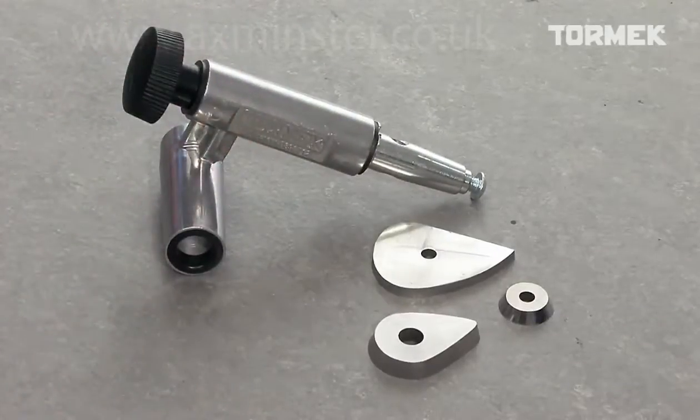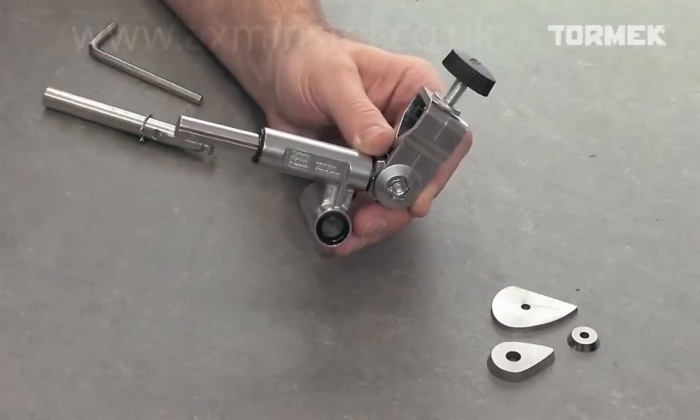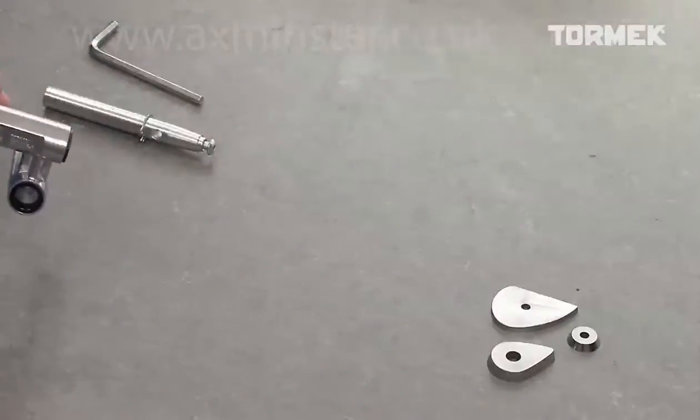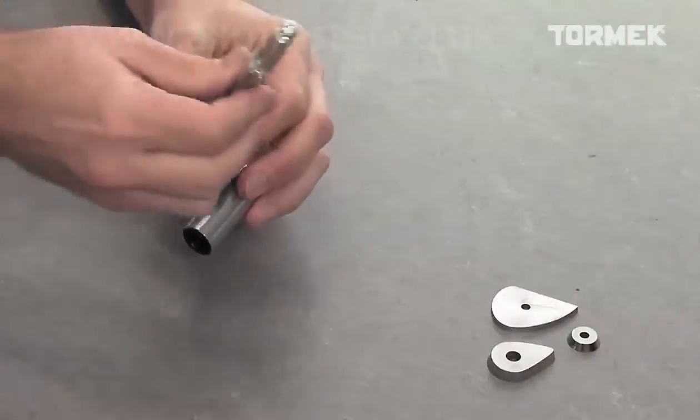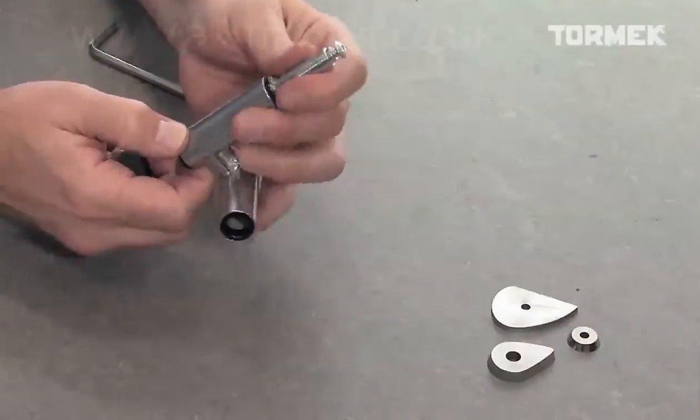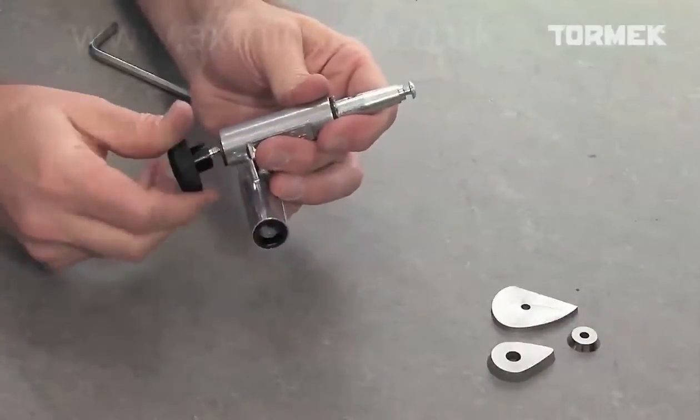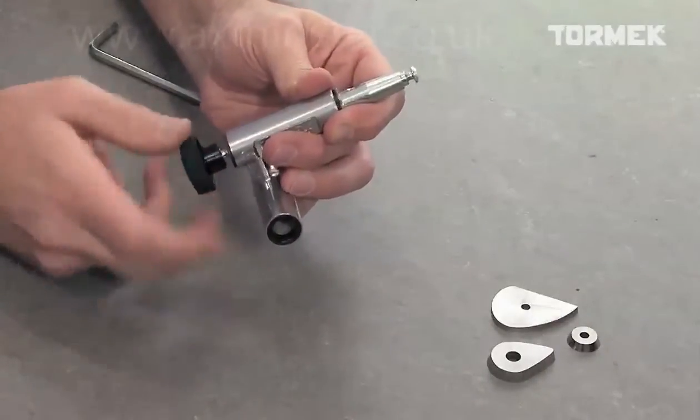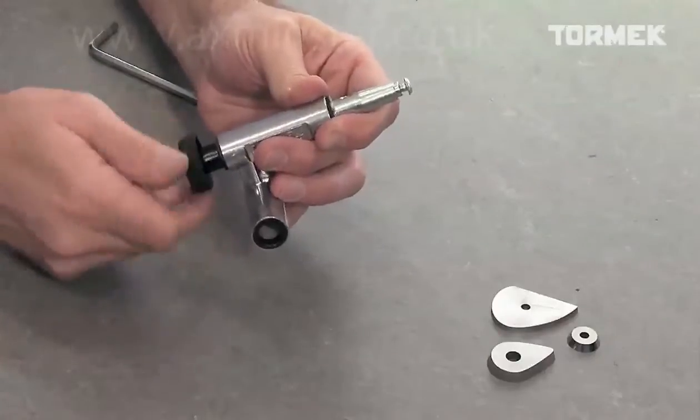You can also sharpen changeable cutting heads. Loosen the sleeve and mount the shaft that comes with the jig. Then, fit the cutter, adjust to the edge angle, and sharpen.